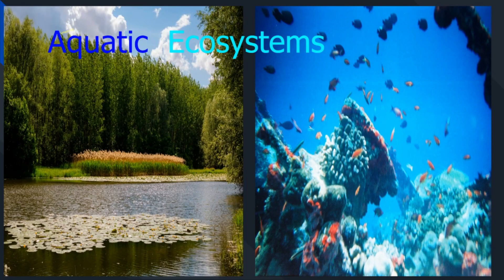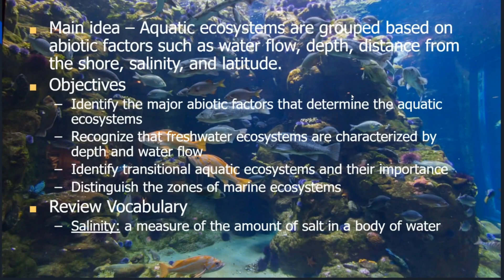We will continue our study of ecosystems in lesson 3.3. Our main focus will be on aquatic ecosystems. Aquatic ecosystems are grouped based on abiotic factors, as any ecosystem is, but we have extras here. Unlike terrestrial ecosystems, we have things such as water flow, depth, distance from the shore, salinity, and latitude.